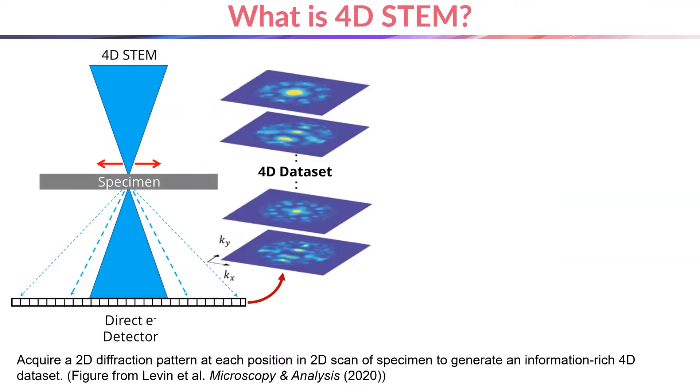4D STEM is a more recent development in which a 2D diffraction pattern is recorded at every point of the 2D raster. This yields a 4D dataset recorded from the specimen which contains vastly more information than is available in the standard 2D technique.